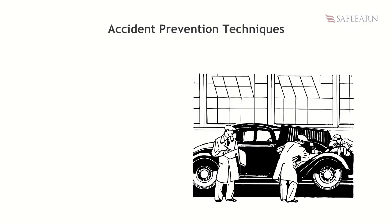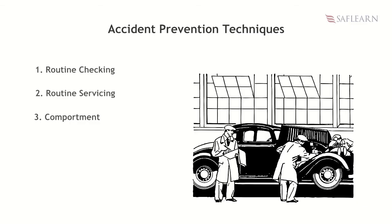Some accident prevention techniques are: first, routine checking, which involves checking all machines to ensure they are in good condition before setting them up for use. Second, routine servicing, which involves servicing all machines and changing worn-out parts regularly so that they can work effectively. Third, individuals should avoid noise making in the workshop because this can make them lose concentration. Fourth, electronic equipment should be used with voltage stabilizers to prevent electrical fire as a result of a power surge. Fifth, every workshop lesson or practice session should be supervised by the teacher, and students should not be left alone in the workshop.